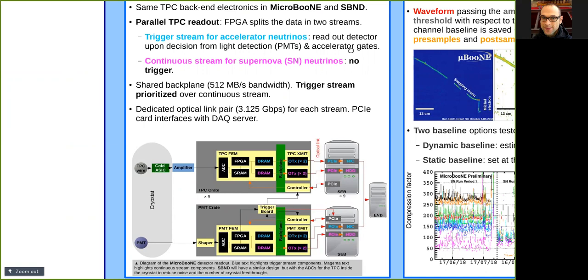One, the trigger stream, only readout upon the coincidence of the light detection system and the accelerator gates. Another stream is continuously written to disk in a triggerless fashion. This second stream is known as the supernova stream.